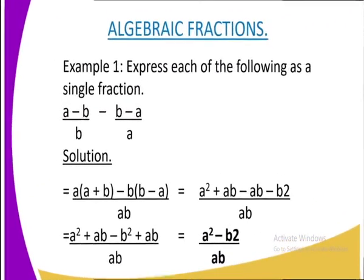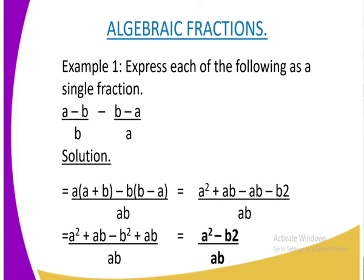Let us look at another example, whereby you have been given an expression. You are required to express it as a single fraction. We are just going to do the same as you have done to get the LCM. And the LCM between B and A, the LCM is AB or BA. You divide the first part, that is A minus B over B, you divide by BA to get A. You multiply everything by A, that is A into A plus B. And when you get the LCM, we have said the LCM is AB. We divide AB divided by A to get B. And you multiply everything by B.